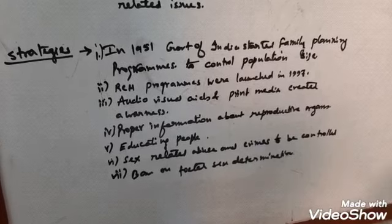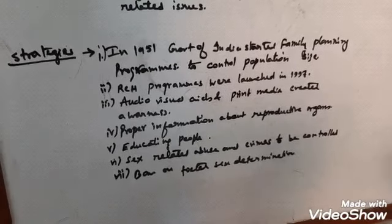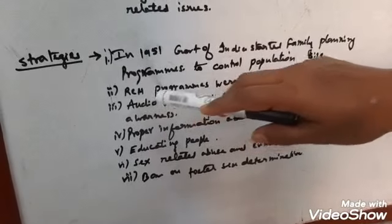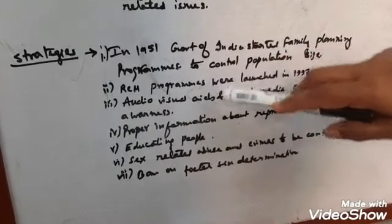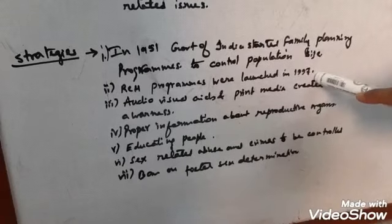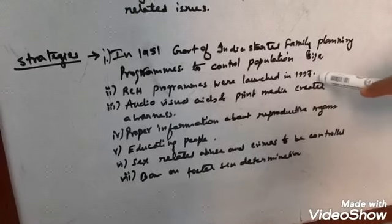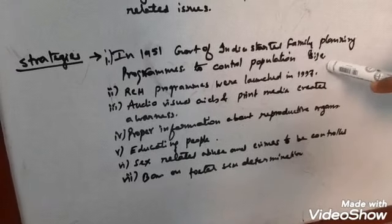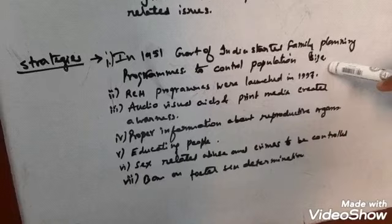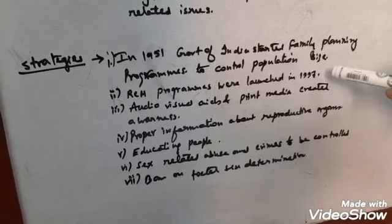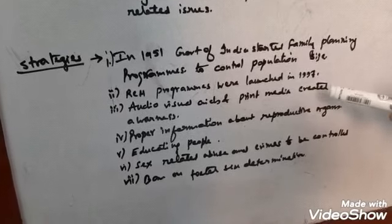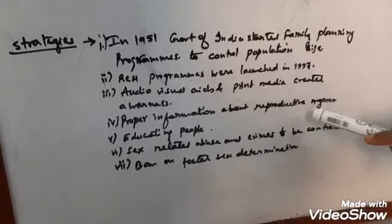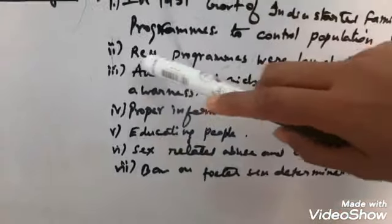Next is RCH program. What is RCH? Reproductive and Child Health Care Program. This was launched in 1997 by Indian government. Now, why this was launched? The first point is to create awareness among people about various reproductive-related issues, and the second point is to provide facilities and supports for building the reproductively healthy society. These are the two main motives of RCH program.